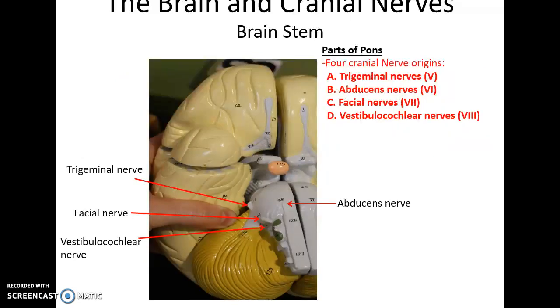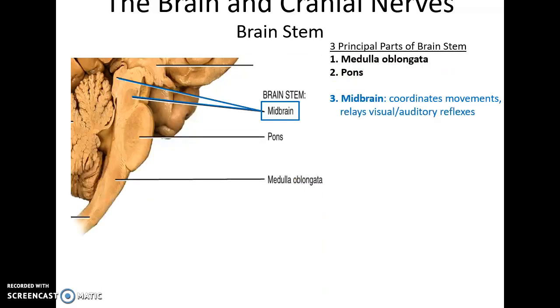Four main cranial nerves originate in the pons: the trigeminal nerve, the abducens nerve, the facial nerve, and the vestibulocochlear nerve.